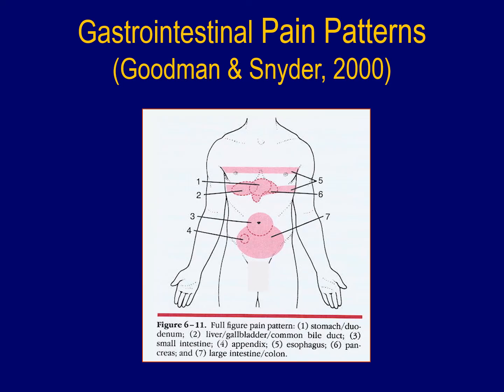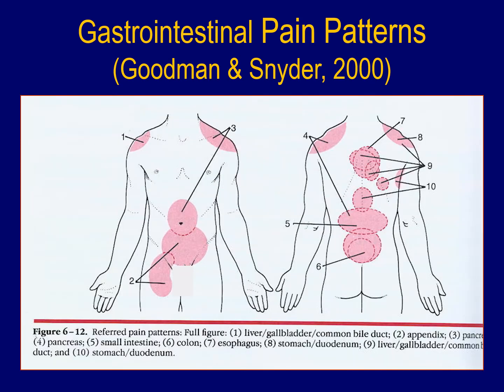Let's begin by reviewing some of the pain patterns related to the gastrointestinal system. Many of these structures can certainly refer to the abdomen, as well as potentially into the chest area. These structures can also refer into the back and potentially even shoulder regions. Structures higher in the GI system, like the esophagus and stomach, may tend to refer up into the thoracic spine region, while structures relating to the lower GI system, like the colon, would tend to refer lower into the lumbosacral region.